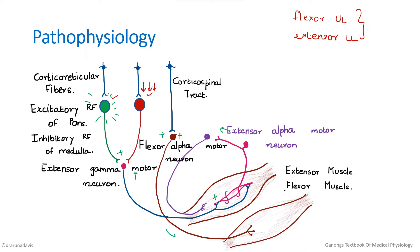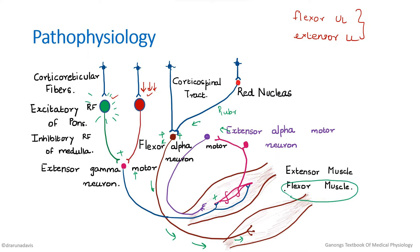The corticospinal tract innervates the flexor motor neurons, and this is also supported by the rubrospinal tract. From the red nucleus, the rubrospinal tract innervates the flexor alpha motor neurons, so there is constant activation of the flexor muscles. In summary, extensor muscles are under control of reticular formation fibers, while flexor muscles are under the constant influence of the corticospinal and rubrospinal fibers.